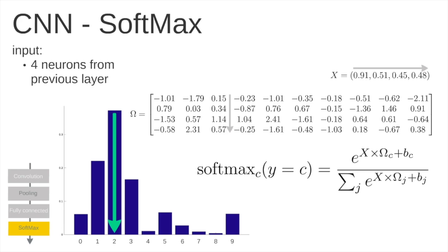Since the number two is the highest value of softmax, the classification produced by all this process is the number two.